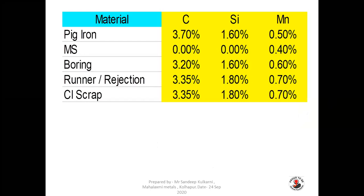This is a standard format for making a charge calculation. On the left-hand side column you can see various materials like pig iron, MS scrap, boring, runner riser, rejection and CI scrap. On the right-hand side columns, carbon, silicon and manganese content in the respective material is noted. This is basically a master sheet and you can change it as per your incoming specification of raw material — pig iron, MS scrap, boring and CI scrap — element wise.